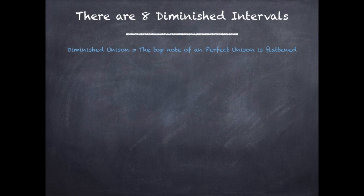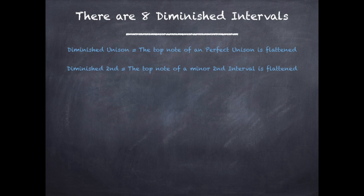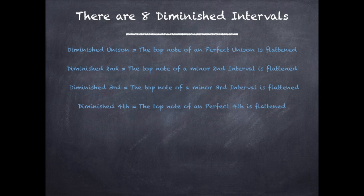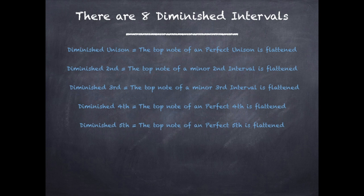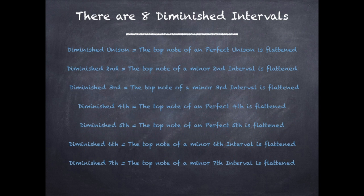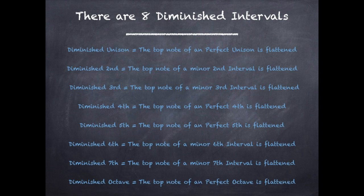A diminished unison, where you flatten the top note of a perfect unison. A diminished second, where you flatten the top note of a minor second interval. Diminished third, where you flatten the top note of a minor third interval. Diminished fourth, where you flatten the top note of a perfect fourth interval. Diminished fifth, where you flatten the top note of a perfect fifth interval. Diminished sixth, where you flatten the top note of a minor sixth interval. Diminished seventh, where you flatten the top note of a minor seventh interval. And a diminished octave, where you flatten the top note of a perfect octave.